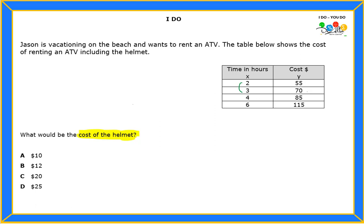I need to consider: how do I go from 2 to 3? Well, I can add 1. From 3 to 4, I can add 1. But then the next one will be plus 2. So if I want to find the constant rate of change, I just need to look at the first three points, because the fourth one has a bigger interval. Now looking at the Y values: from 55 to 70, you add 15. From 70 to 85, you add 15. From 85 to 115, that's not 15 — that's actually 30.